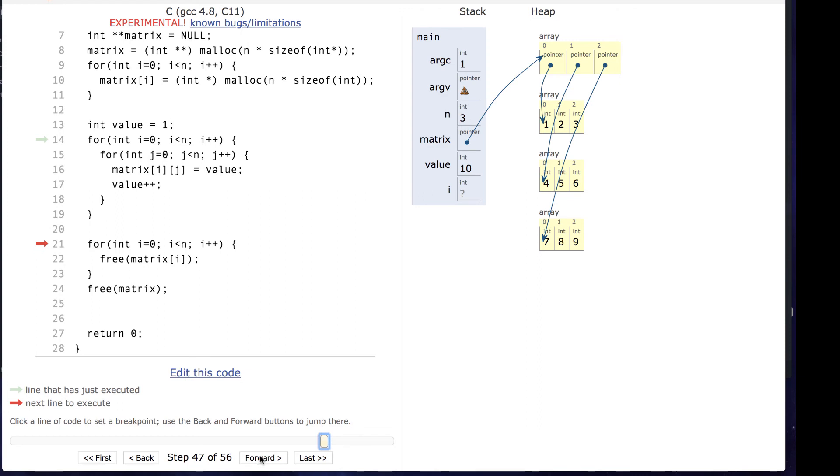Let's edit this code again to do it properly. Now, once we're done using it, we can free up each row. And now we have no memory leaks. Once everything is cleaned up, we can clean up the array of pointers.